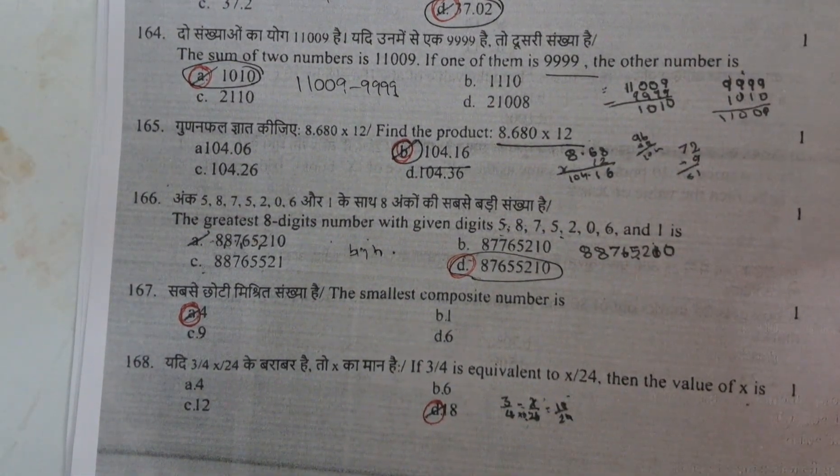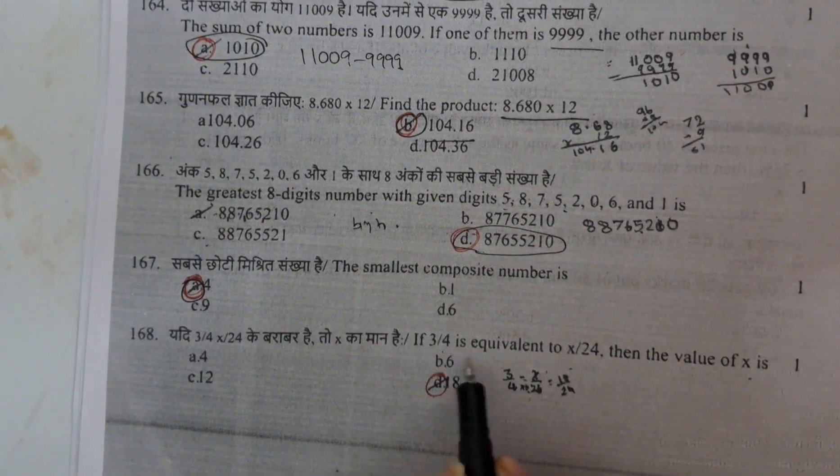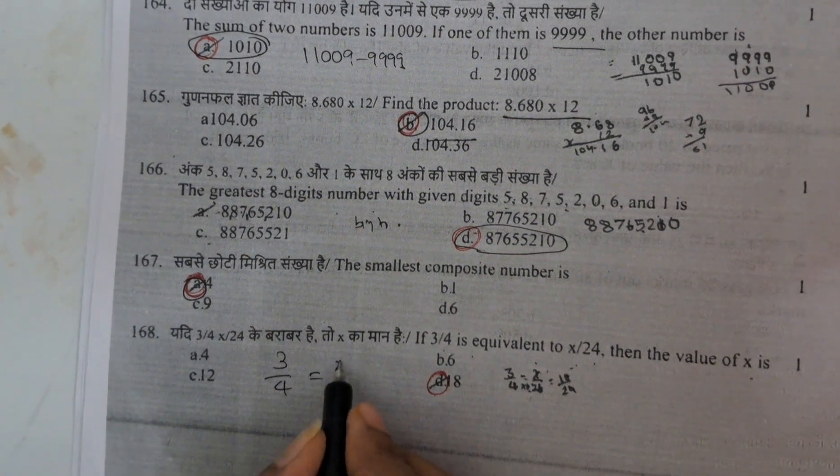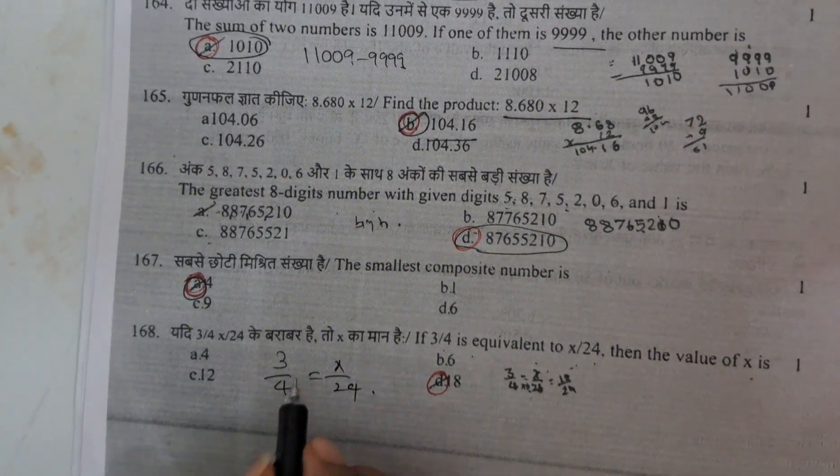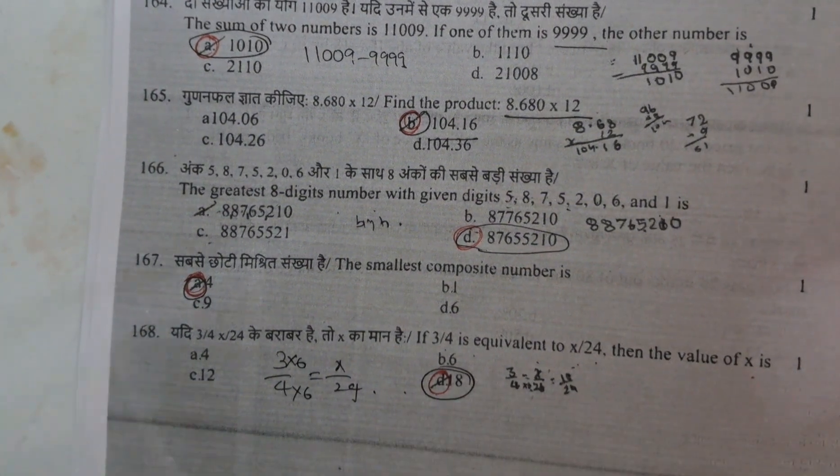The smallest composite number, we all of you know, the smallest composite number is 4. And here, if 3 by 4 is equal to x by 24, means 3 by 4 equals to x/24. It is like equivalent fraction. 4 times 6 is 24, 3 times 6 is 18. Means answer is D.